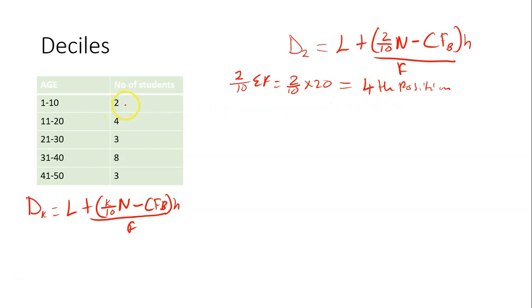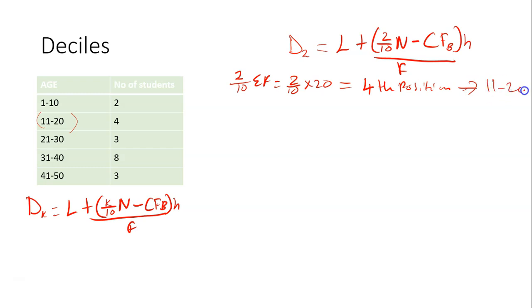To locate the 4th position, the first frequency is 2 — not up to 4. Add the next one to get 6. Meaning at this point it's up to 4. So the second decile class is class 11 to 20.